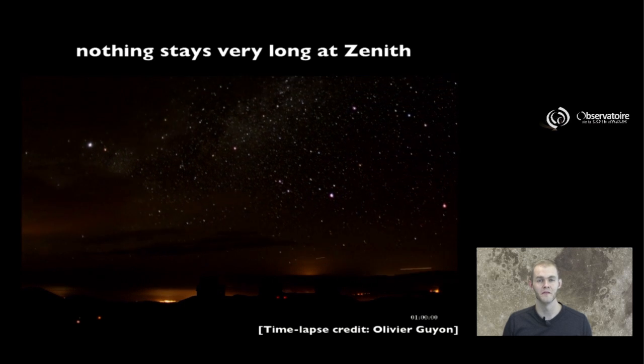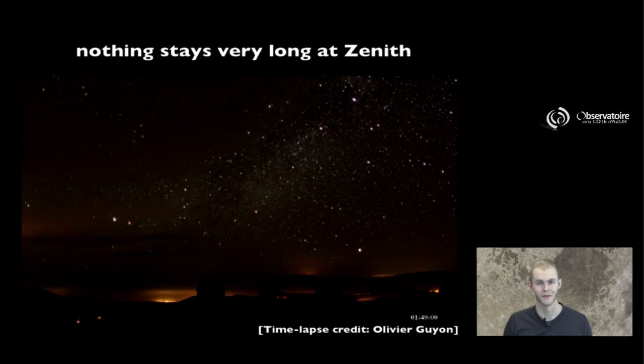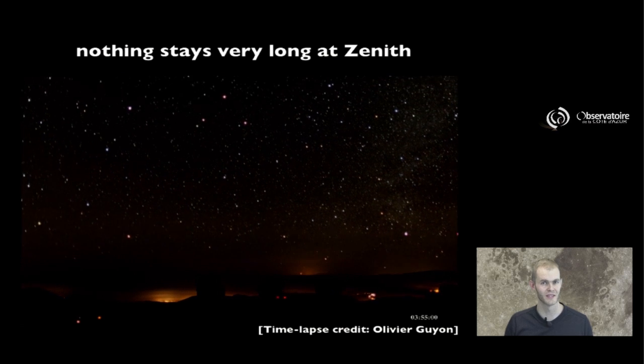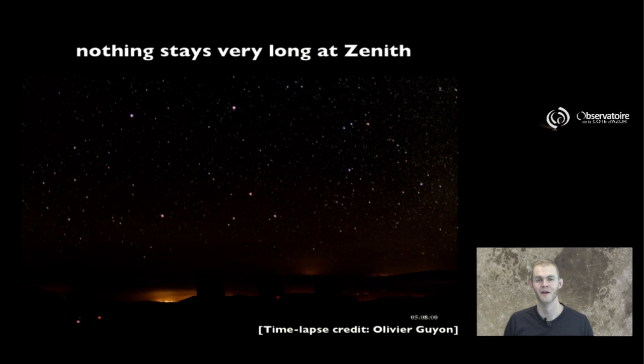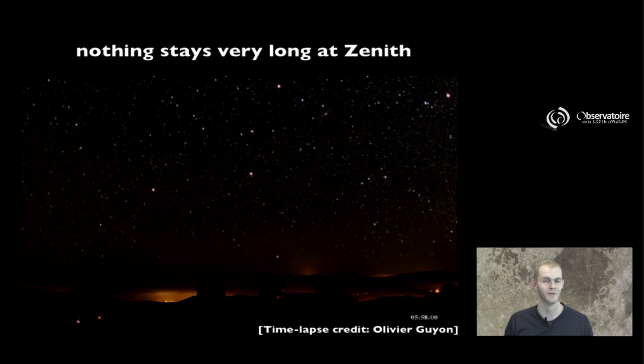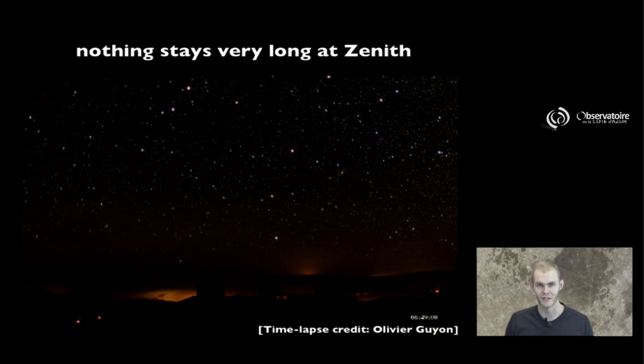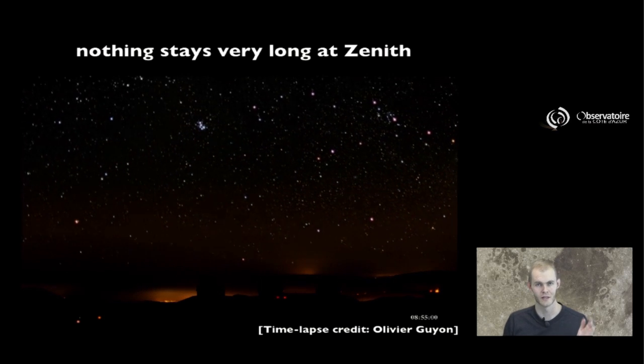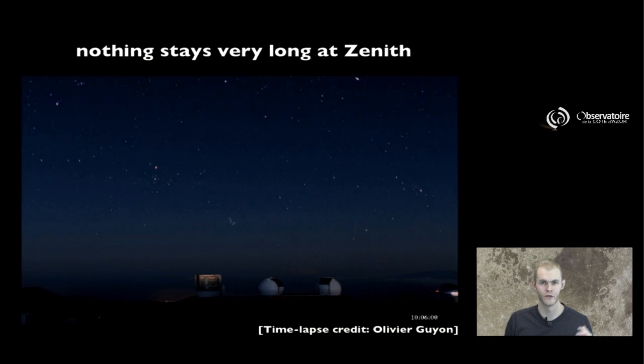The catch is, if you've ever been out at night and looked at the sky for more than a few seconds, you know that nothing stays exactly above your head for very long, simply because the Earth is spinning on its axis. As the night progresses, we simply see stars and planets and everything on the celestial sphere drift westward. And so no object, no target is actually going to stay exactly at zenith for more than a fraction of a second.